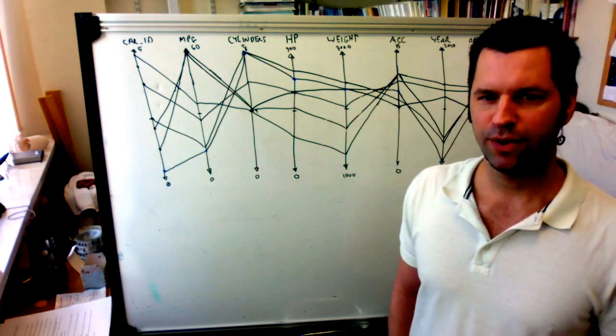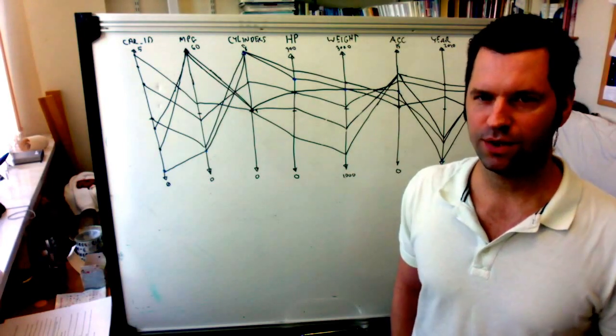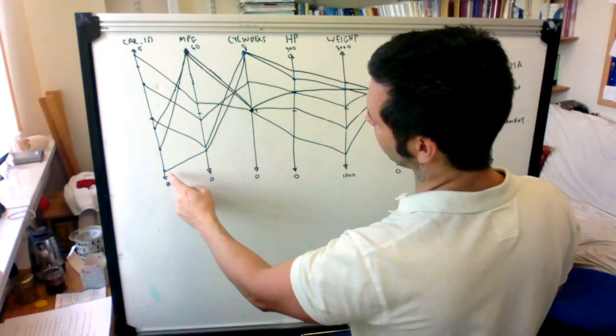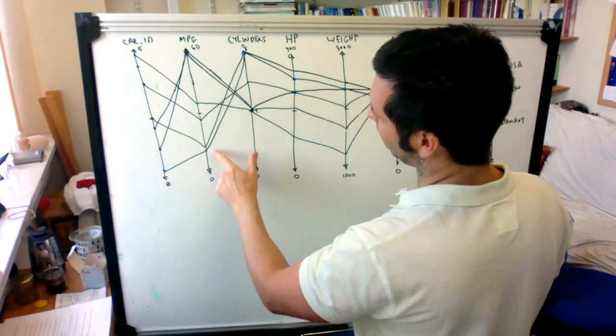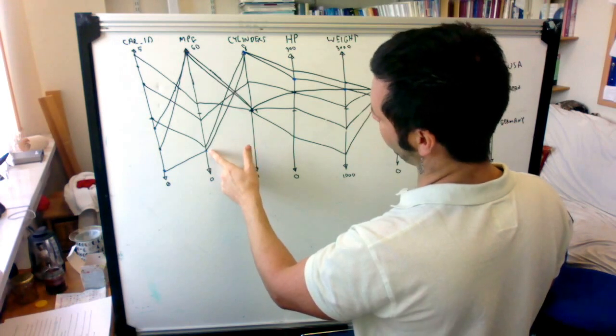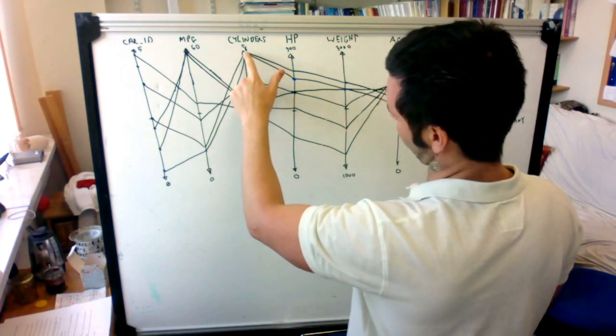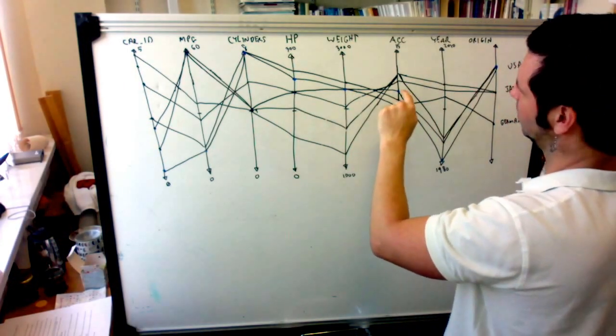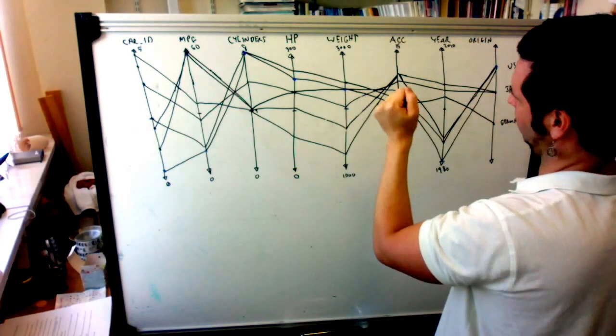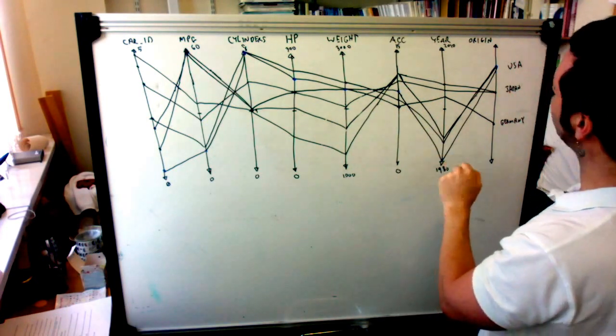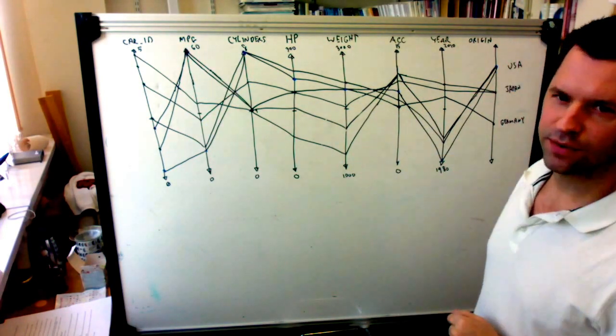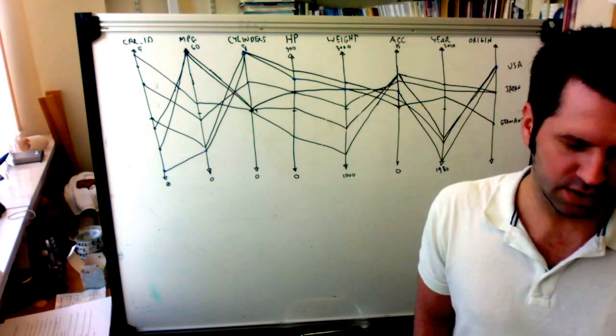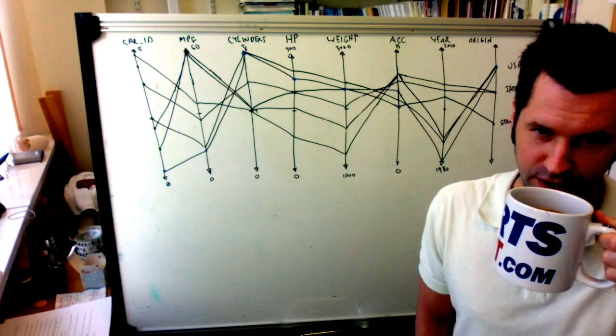And each car is represented by a polyline. So an individual car is represented by a polyline. So here's car zero. It has a relatively low number of miles per gallon. It has eight cylinders. It has a relatively high horsepower, high weight, high acceleration. It was made in 1980 and it comes from the U.S. So that's a summary of what the actual data is and what we're visualizing.